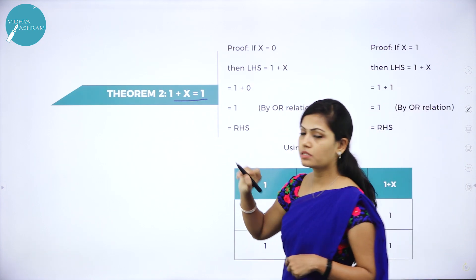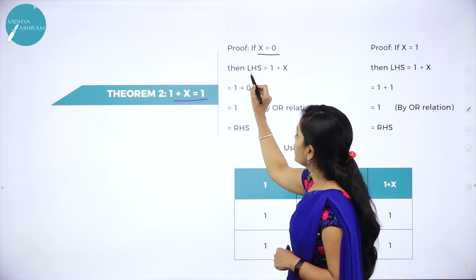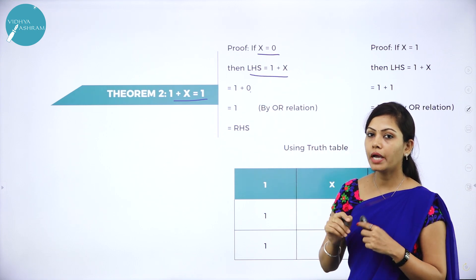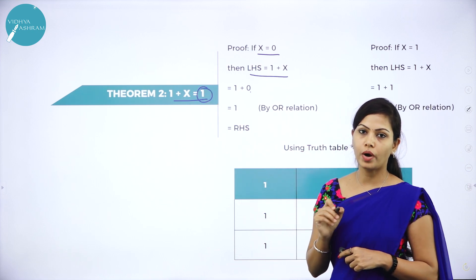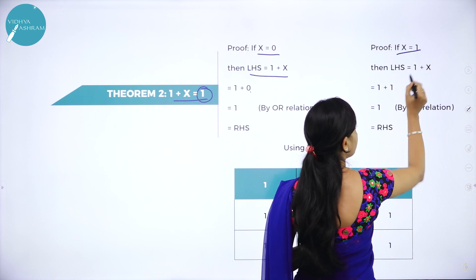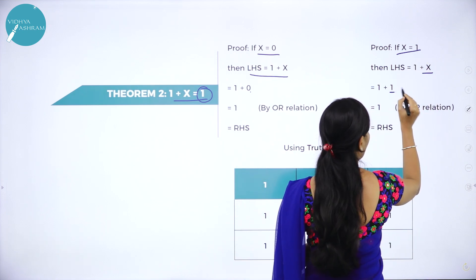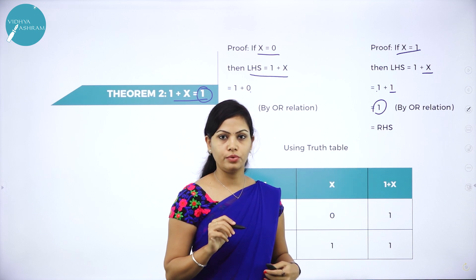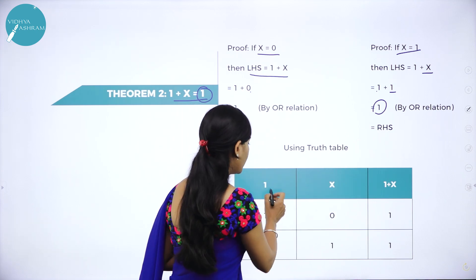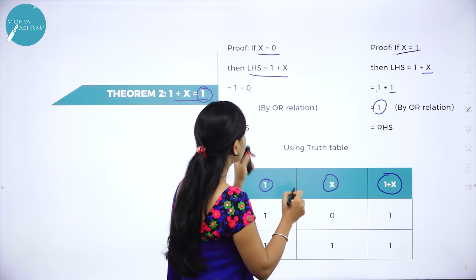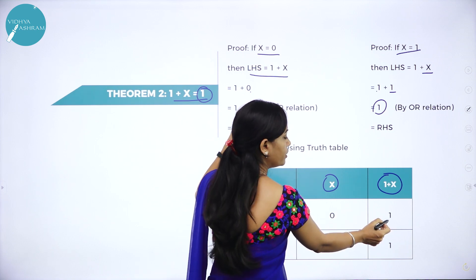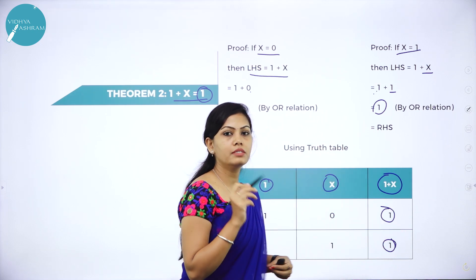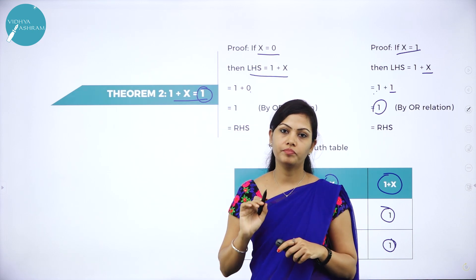Theorem 2 is 1 plus x is equal to 1. If x is equal to 0, LHS is 1 plus 0, which equals 1 by OR relation. If x is equal to 1, then 1 plus 1 equals 1 by OR relation. So LHS value is 1 in both cases. The truth table for theorem 2: 1 plus 0 is equal to 1, and 1 plus 1 is equal to 1. So 1 plus x is equal to 1.